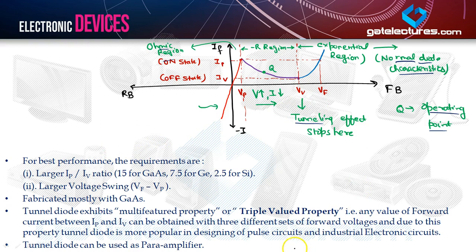Hey folks, I am stopping this lecture here. I will discuss more in the next video lecture, covering Zener diode — which is important for gate and IES — solar cells, and Schottky diodes. These three diodes are very important for gate and IES. See you in the next video. Thank you very much.